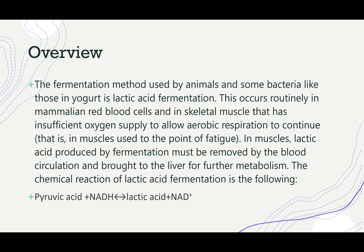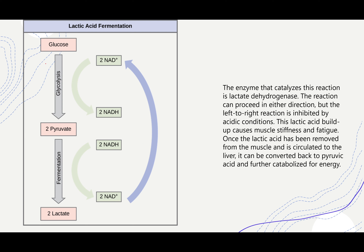Lactic acid fermentation occurs routinely in mammalian blood cells and skeletal muscle that has insufficient oxygen supply to allow aerobic respiration to continue. In muscles, lactic acid produced by fermentation must be removed by the blood circulation and brought to the liver for further metabolism. The chemical reaction for lactic acid fermentation shows pyruvic acid plus NADH being used to produce lactic acid and NAD.